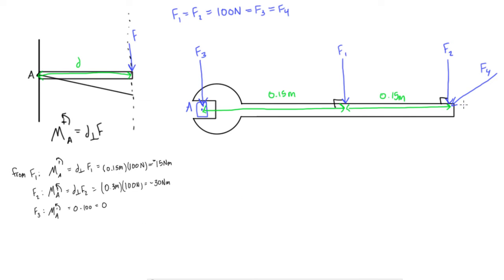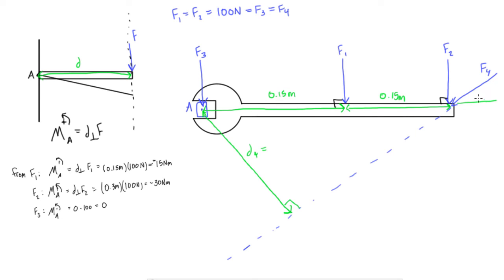Now let's look at what's going on with F4. Its line of action goes like this, and the perpendicular distance to the line of action — the shortest line we can draw from point A to that line of action — gives us an angle of 90 degrees. We'll call this D4, and we're going to say the angle here is 30 degrees. D4 turns out to also equal 0.15 meters — just handy that it worked out that way, but it's not always this simple.